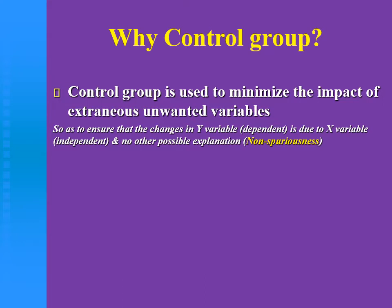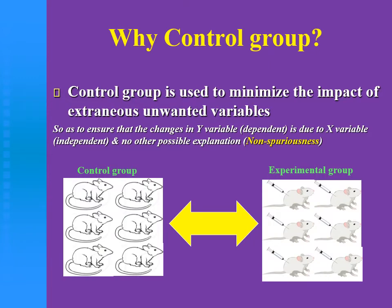بمعنى إن أنا عاوز أستخدم control group علشان أتأكد إن اللي حصل في الـ y variable اللي هو الـ outcome measure أو dependent variable اللي بنقيسه is due to x variable اللي هو الـ independent variable زي الدواء أو whatever substance بستخدمها أو أي manipulation أو interventions، وإن هذه التغييرات is not due to other possible explanation اللي بنسميه في الـ causality relationship الـ non-spuriousness.